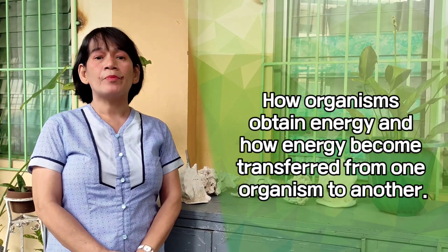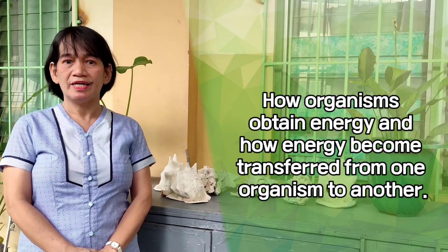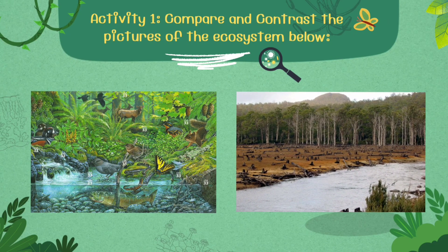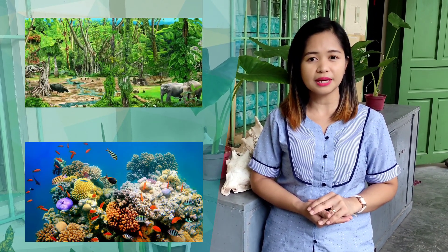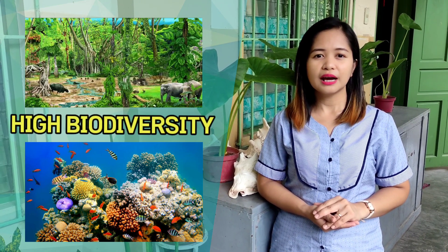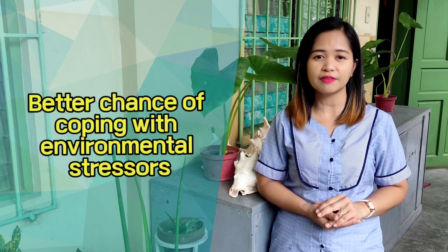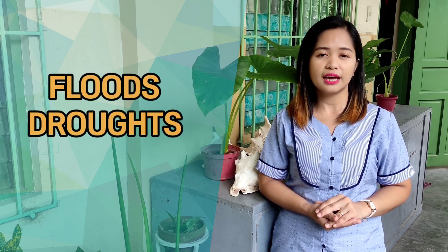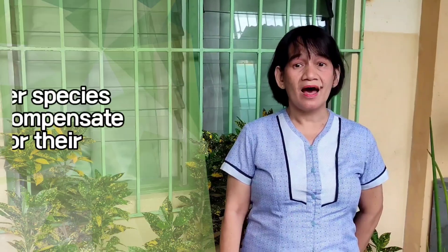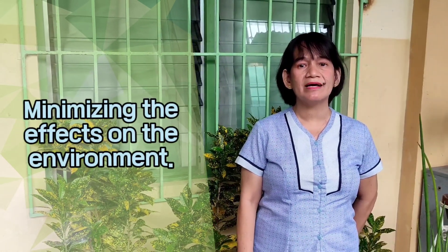You will also learn how an organism obtains energy, and how energy becomes transferred from one organism to another. Let us explore the importance of biodiversity to an ecosystem by answering this activity — compare and contrast the pictures of the ecosystem below. When an ecosystem has a high number of species present, it means that it has a high biodiversity. The high number of species ensures stability because it has a better chance of coping with environmental stressors such as floods, droughts, and diseases. The variety of species means that when there is an increase in the population of one species, other species can compensate for their loss, thus minimizing the effect on the environment.